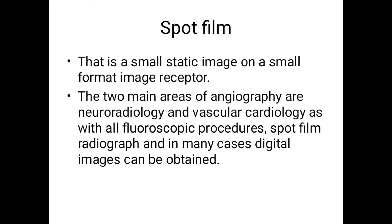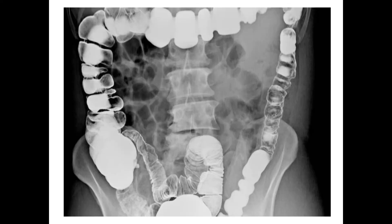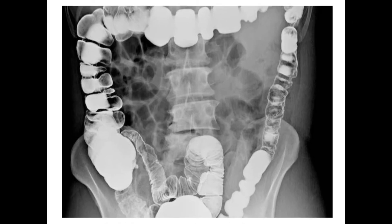If we have a CR (computerized radiography) system, we take a film on the spot and develop it in a darkroom. If we have digital images — DR — then we can display them directly in digital form. There are spot film images related to procedures such as barium or barium follow-through, where you can see the intestines filled with contrast, showing white and black shadows.